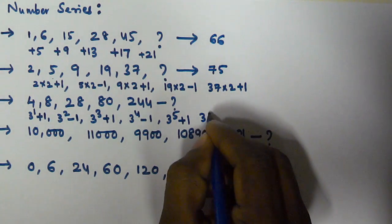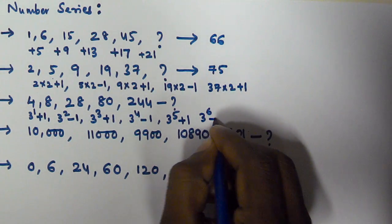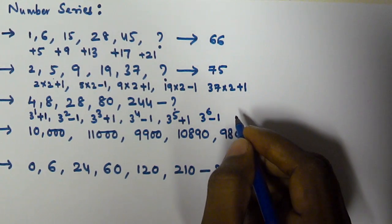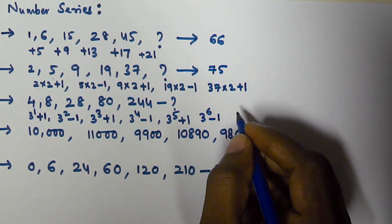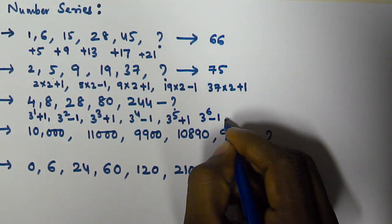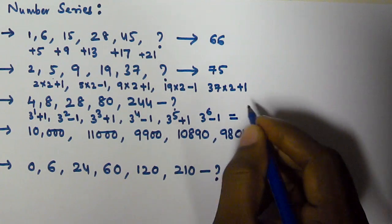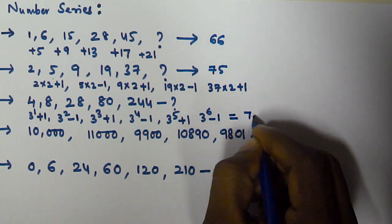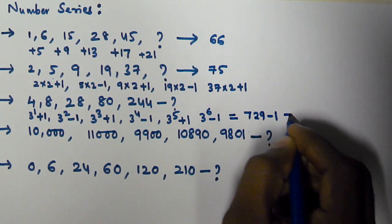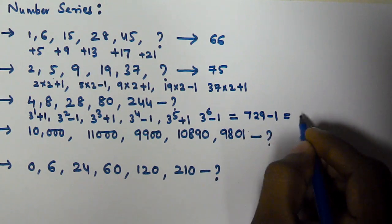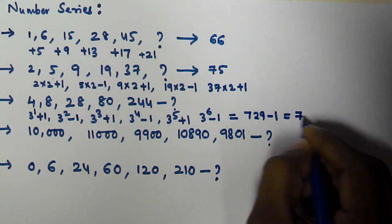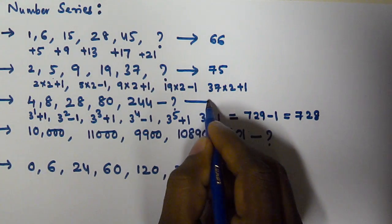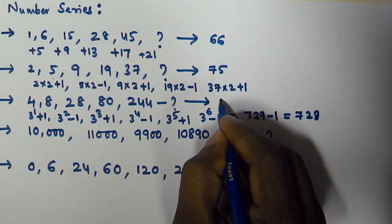So the next term is 3⁶−1. Since 3⁶=729, minus 1 gives 728. The next number in this series is 728.